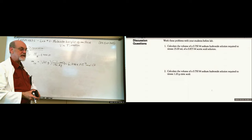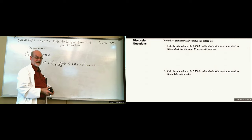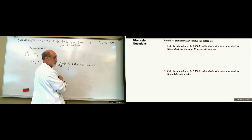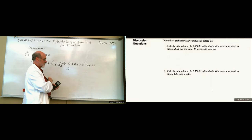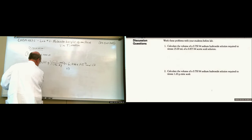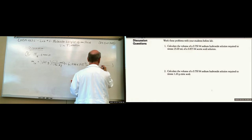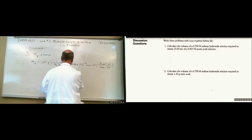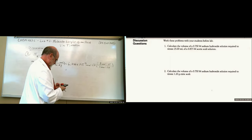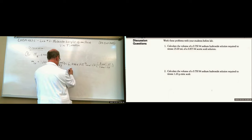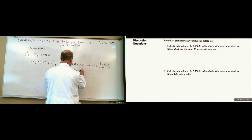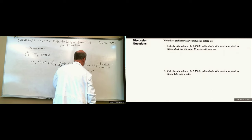How many moles of hydrogen ions is that? Times 3 — three moles of hydrogen for every mole of citric acid. Using it as a conversion factor: for every one mole of citric acid we get 3 moles of hydrogen ions. So 3 times 6.246 × 10⁻³ gives 1.874 × 10⁻² moles of hydrogen ions.